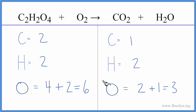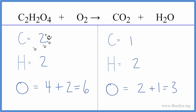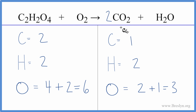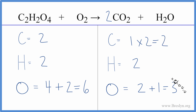Let's try to balance the carbons first and leave the oxygens till last. We have two carbons on the reactant side and just one on the product side, so we can put a two in front of the CO2 — one times two gives us two carbons, so those are balanced. But we do need to update our oxygens because the coefficient applies to everything.